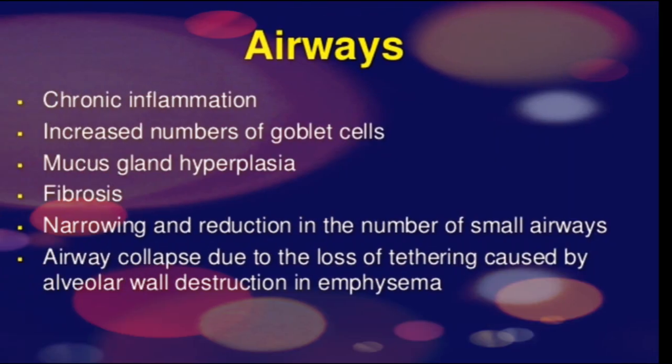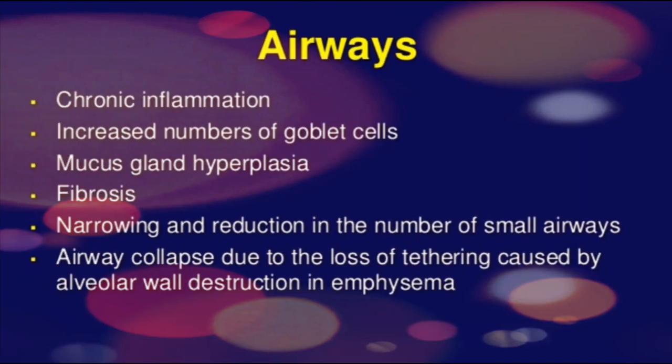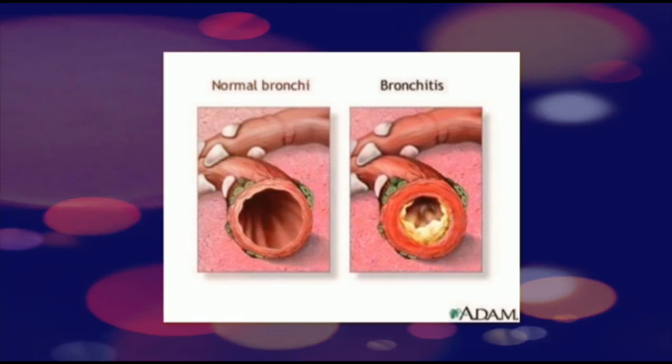Pathology of COPD includes chronic inflammation, increased number of goblet cells, mucosal hyperplasia which leads to chronic bronchitis, fibrosis, narrowing and reduction in number of airways, and airway collapse due to alveolar wall destruction. Bronchitis depicts a large amount of purulent sputum which is mainly formed by hyperplasia of mucous glands and goblet cells.